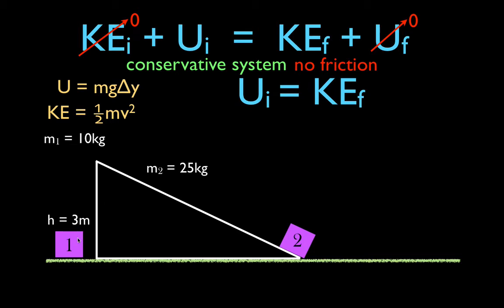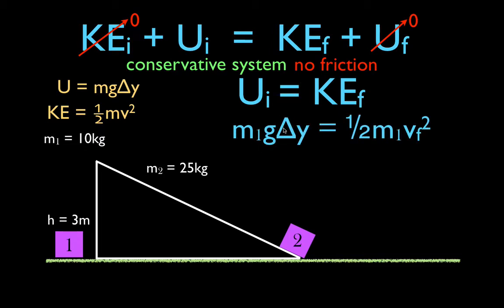Let's look at object one more closely. We expand the equation: the potential energy is mg·Δh, and kinetic energy is ½mv². So: m₁ × g × Δh = ½ × m₁ × v_final². Notice that m₁ appears on both sides — we can cancel it. This means the velocity does not depend on the mass.